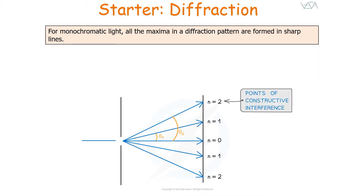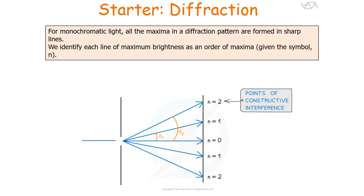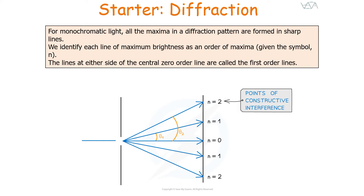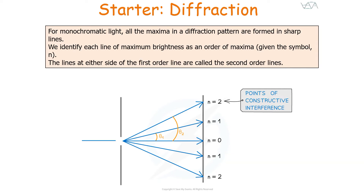From monochromatic light, all the maxima produced in the diffraction pattern appear as sharp lines. We identify each line of maximum brightness as an order of diffraction, given the symbol N. The line at the centre of the pattern, in the same plane as the beam, is called the zero order line, N equals zero. The lines at either side of the zero order line are called the first order lines, and the lines on either side of those are the second order lines, and it continues on.